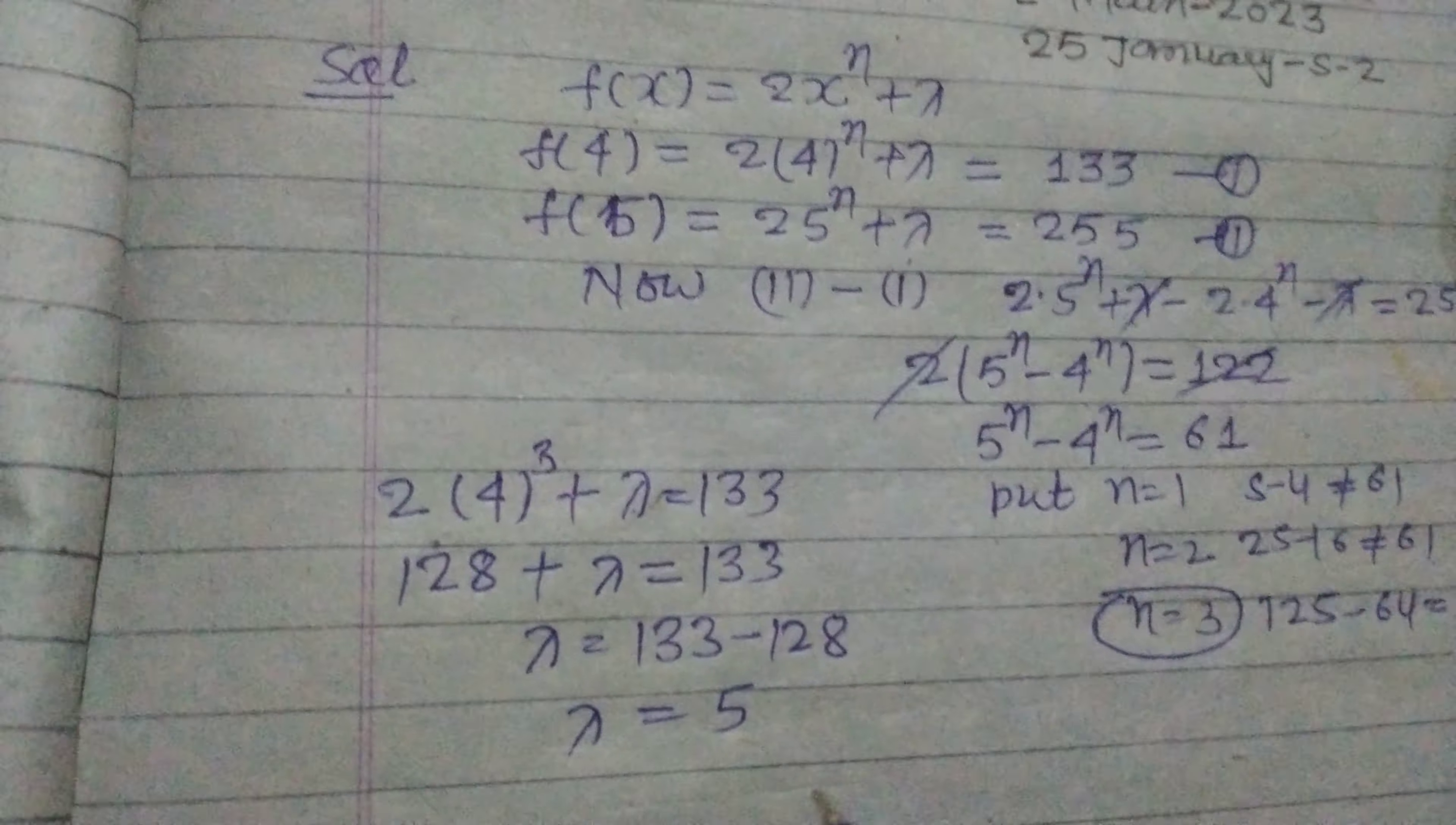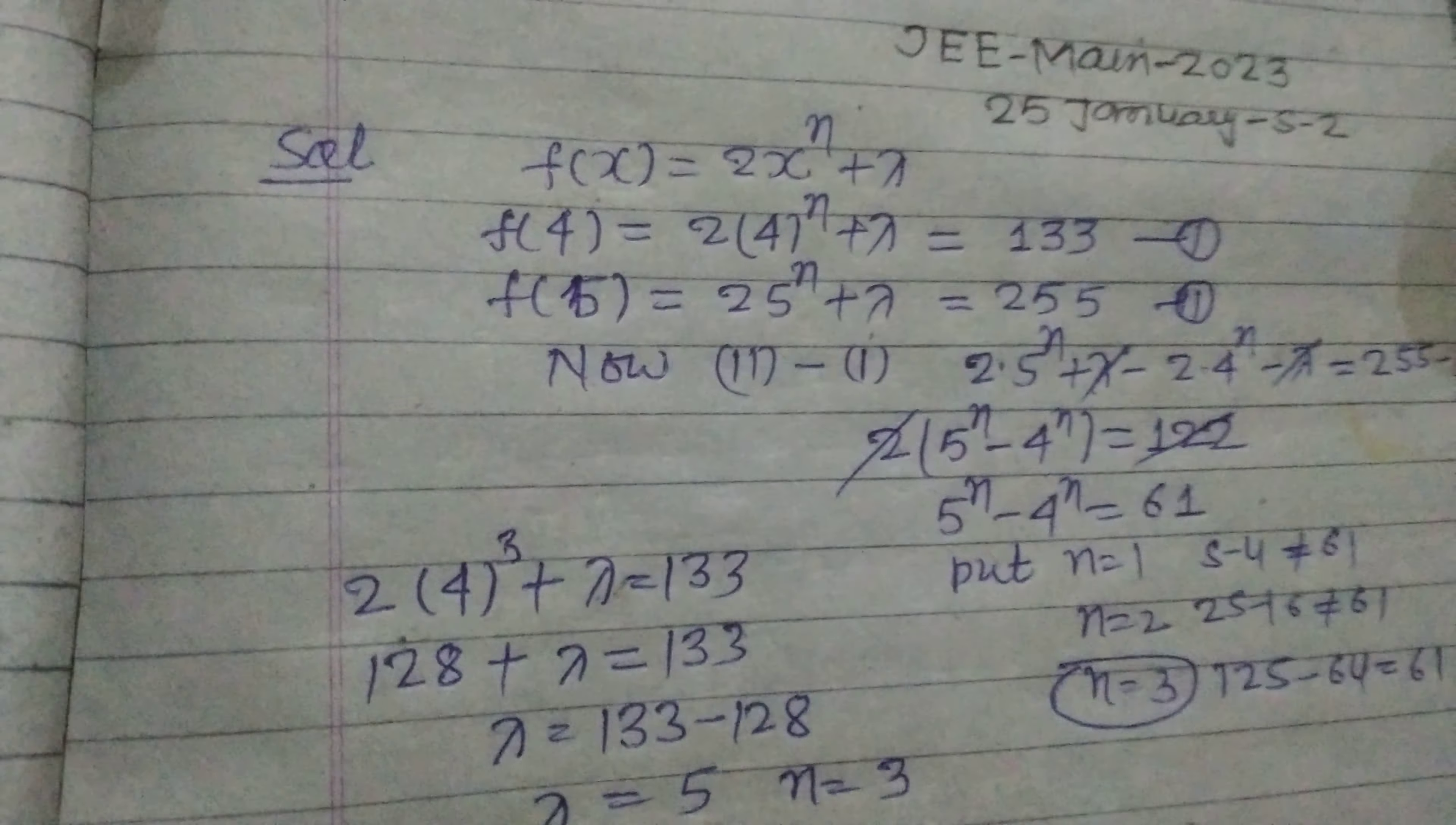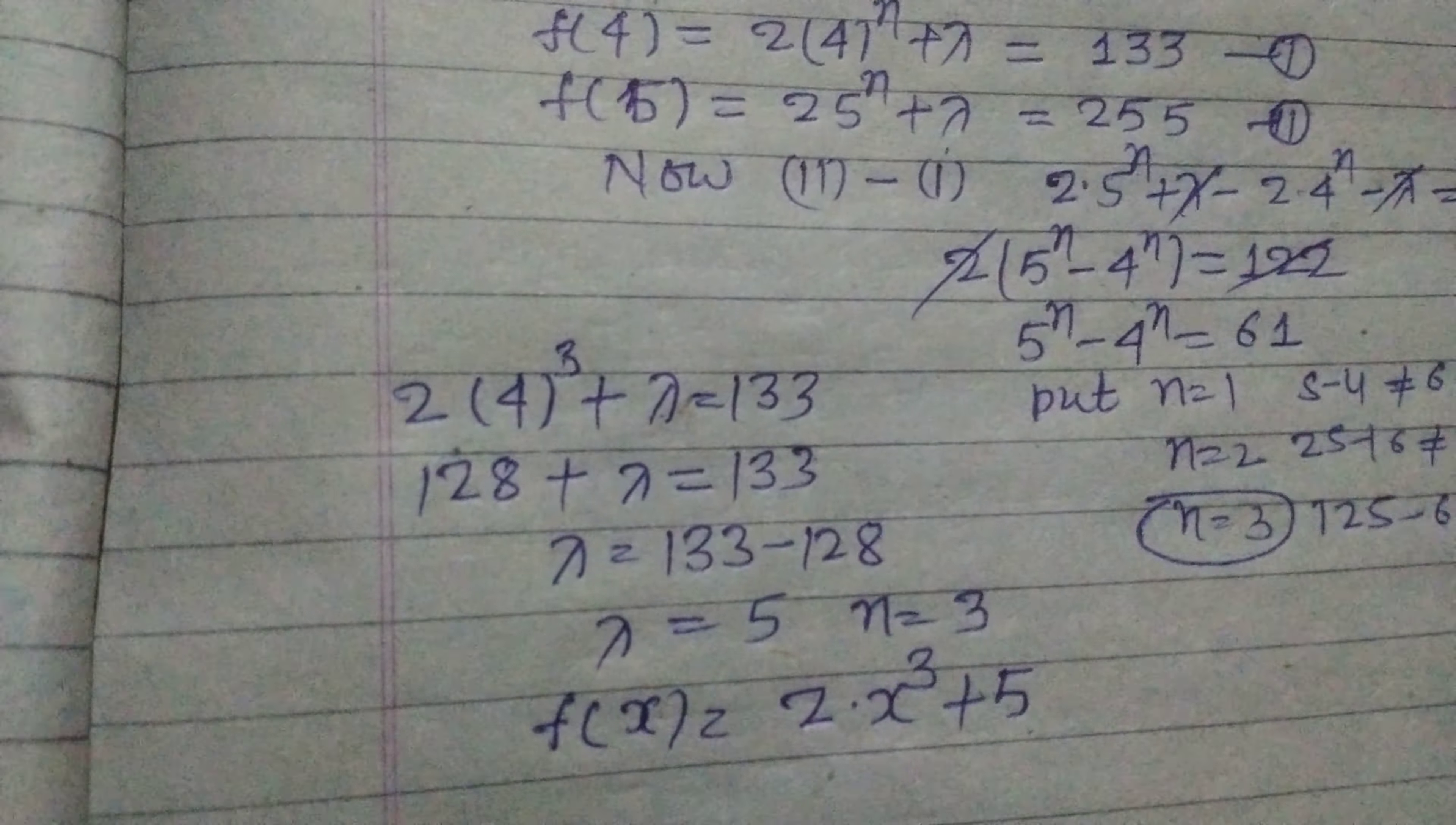This is 5. So λ = 5 and n = 3. Using this, we get the value f(x) = 2x^3 + 5. Now f(3) is how much? 2 × 3^3 + 5.